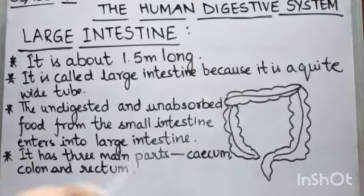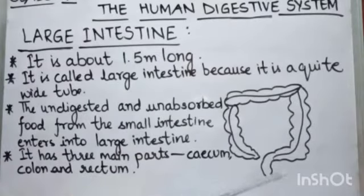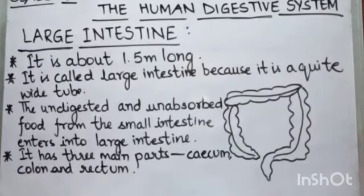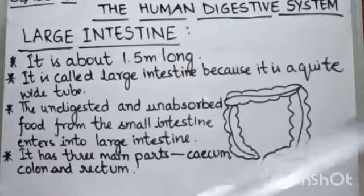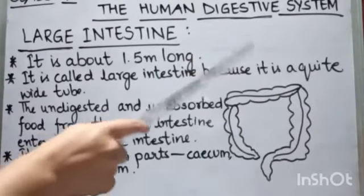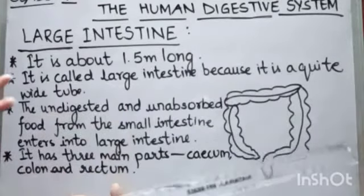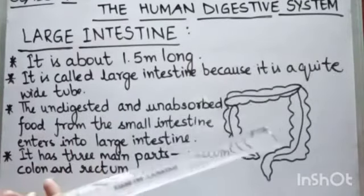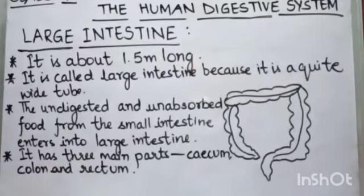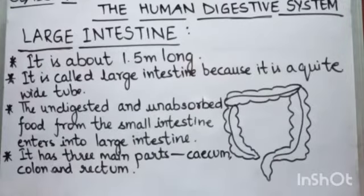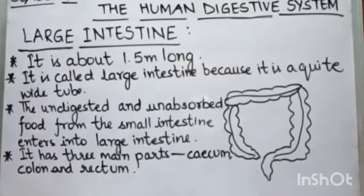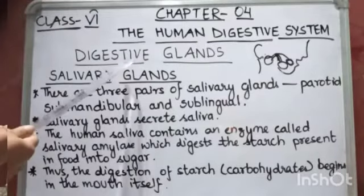Now comes the large intestine. The large intestine is about 1.5 meters long, and it is called the large intestine because it is a quite wide tube — wider than the small intestine. The undigested and unabsorbed food from the small intestine enters the large intestine, where the extra water is absorbed from it. It has got three main parts: the cecum, the colon, and the rectum.